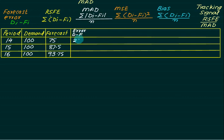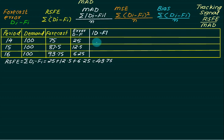First we'll calculate error: 100 minus 75 is 25, 100 minus 87.5 is 12.5, 100 minus 93.75 is 6.25. We can calculate running sum of forecast error by adding all errors: 25 plus 12.5 plus 6.25 equals 43.75. For MAD, since all errors are positive, we have the same values. MAD equals sum of absolute errors divided by sample points: 43.75 divided by 3 equals 14.58.